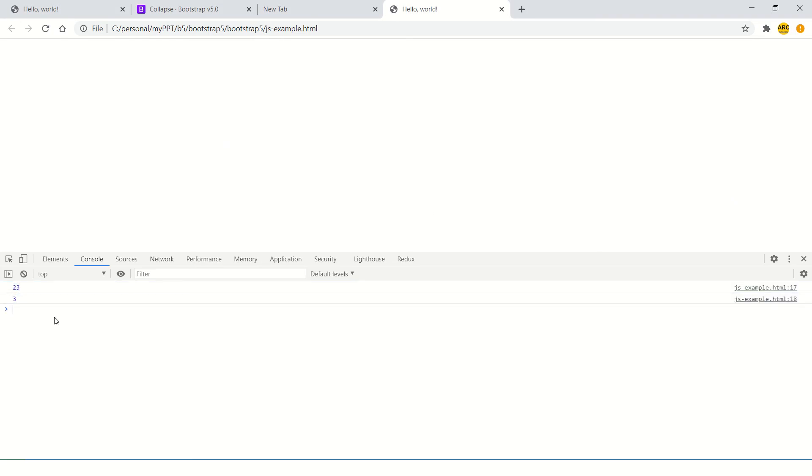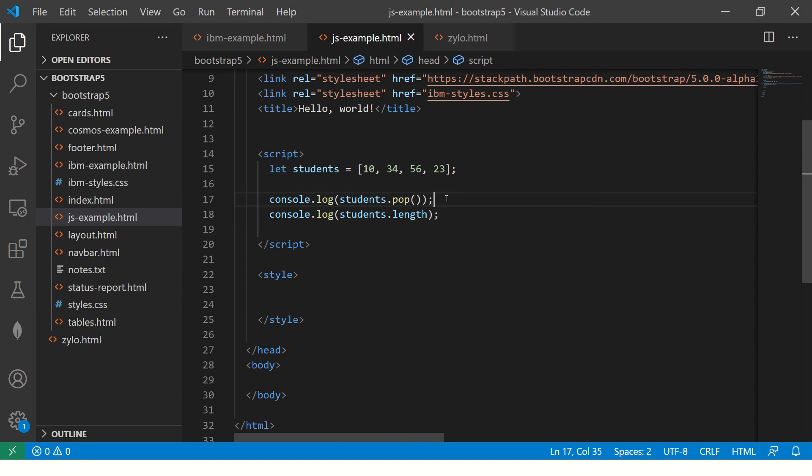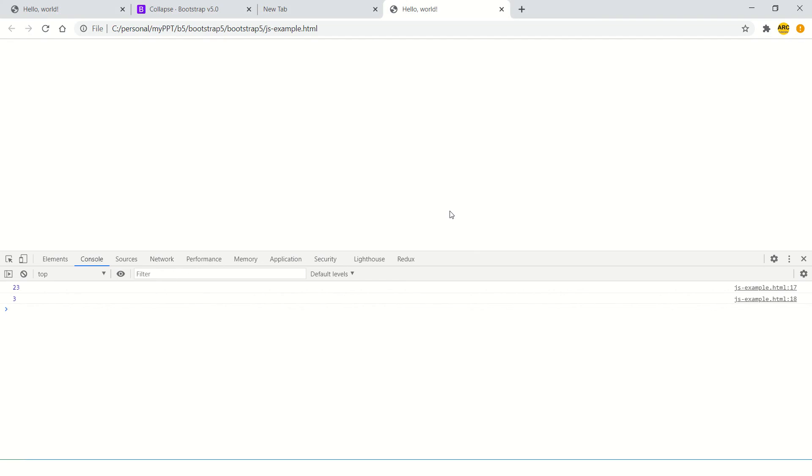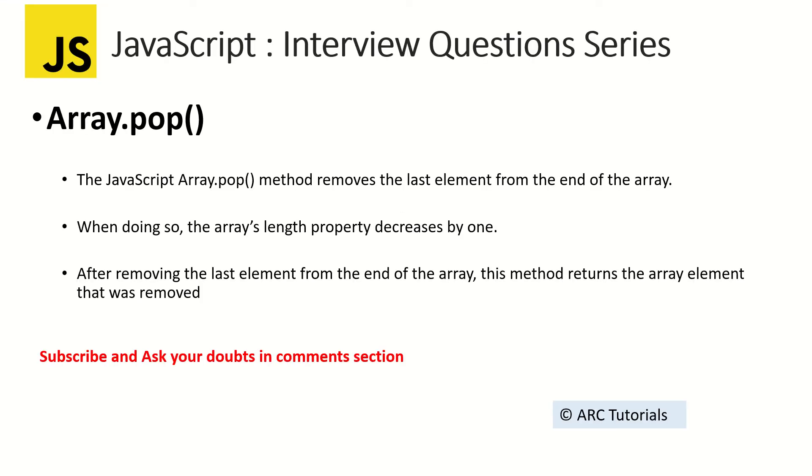It is three, original length is three. It will remove the last element and will return you that particular element, and the total length of the original array becomes three. That's about array dot pop.